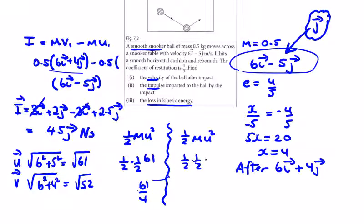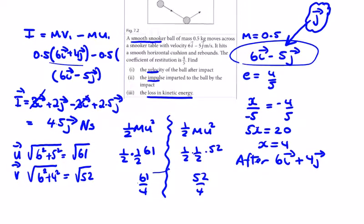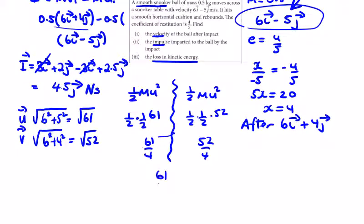So the loss is 61 over 4 minus 52 over 4, which equals 9 over 4. That is in joules.